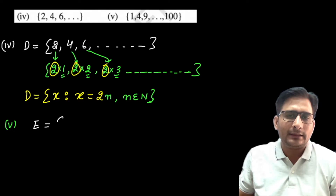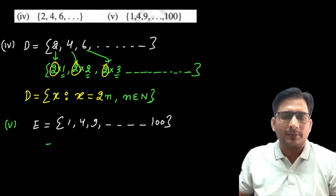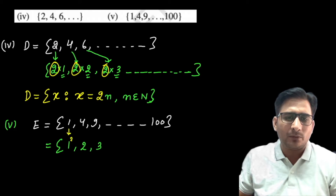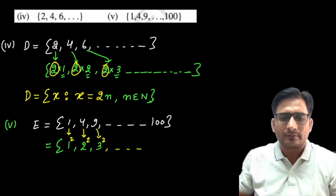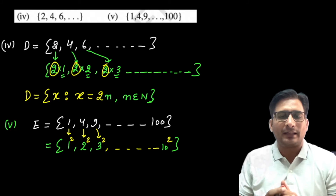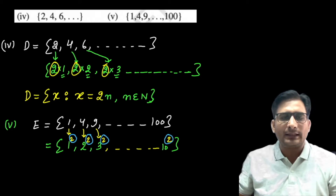The fifth part: Set E = {1, 4, 9, ..., 100}. Looking at the common pattern — 1 = 1², 4 = 2², 9 = 3², and so on up to 100 = 10². The power 2 is fixed throughout. This fixed quantity — the exponent 2 — helps us identify the set builder form.